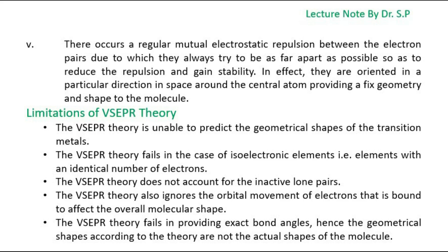The VSEPR Theory also ignores the orbital movement of electrons that is bound to affect the overall molecular shape. The VSEPR Theory fails in providing exact bond angles, hence the geometrical shapes according to the theory are not the actual shapes of the molecule.